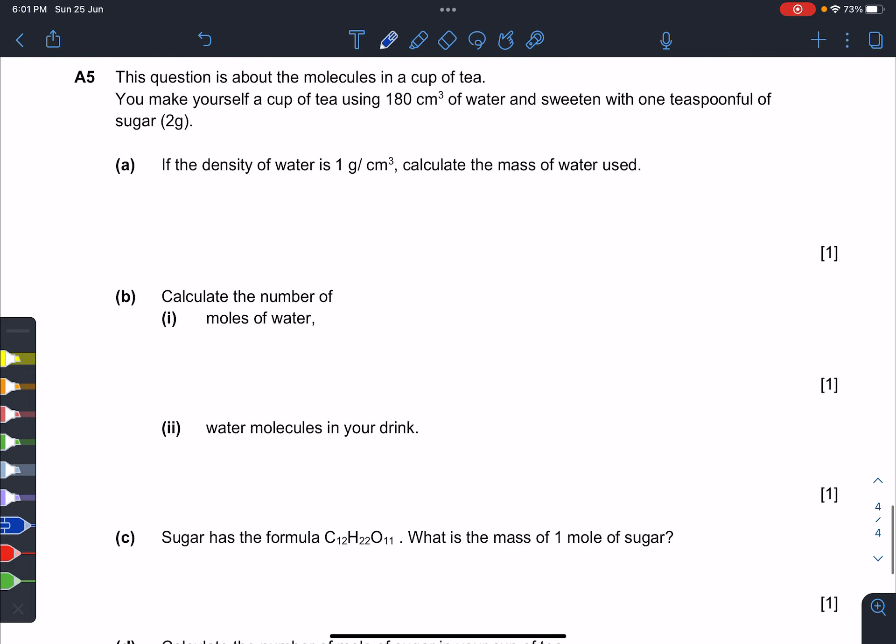The very last question: if the density is one gram per cm³, can you find the mass? This is lower secondary math and science. Density equals mass over volume, so mass equals density times volume, which is 1 g/cm³ times 180 cm³, so you have 180 grams. Cool.